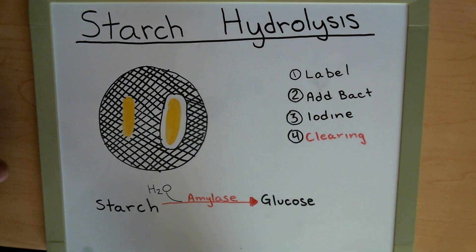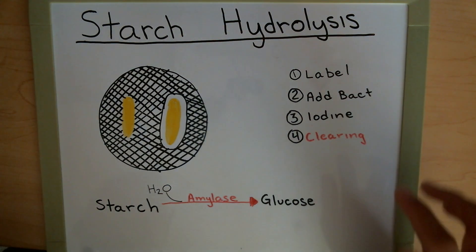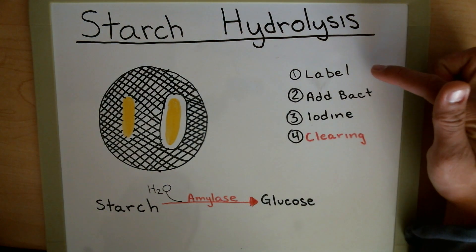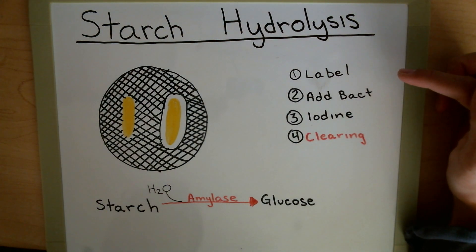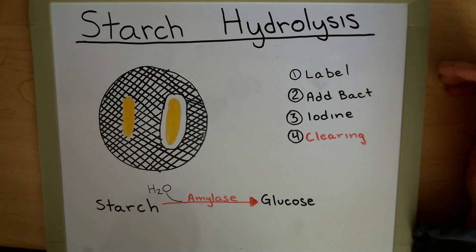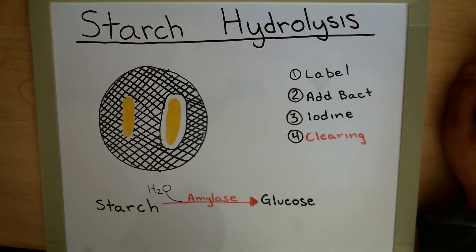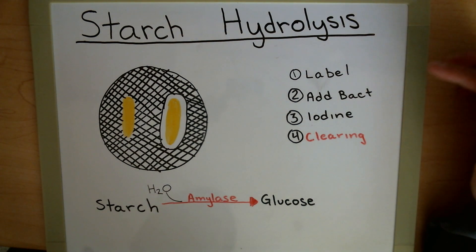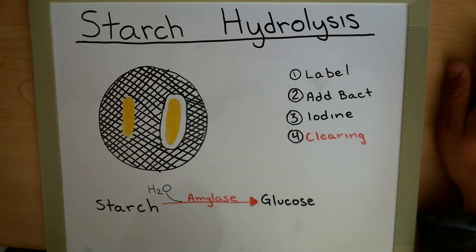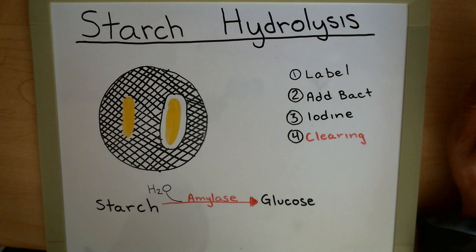The first thing that we're going to do is label our plate. This is very important because you're going to be comparing two different bacteria and you need to label which bacteria is which, because once you add the bacteria, incubate, and pull the plate back out, you're not going to know which one's which. So labeling is very important in this one.